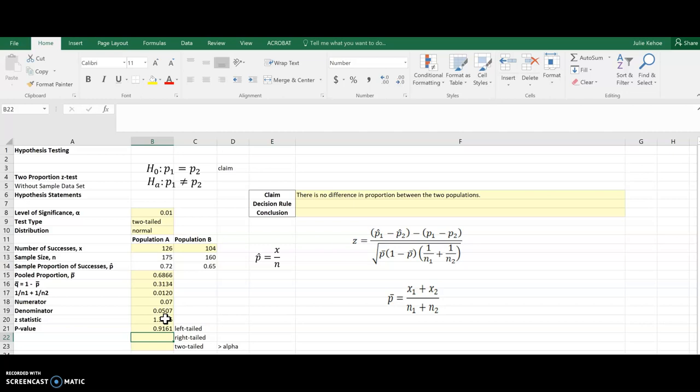If I was doing a right-tailed test, it'll be everything to the right of my z-score, so I can just do one minus what I just got. And there is my value for a right-tailed test.